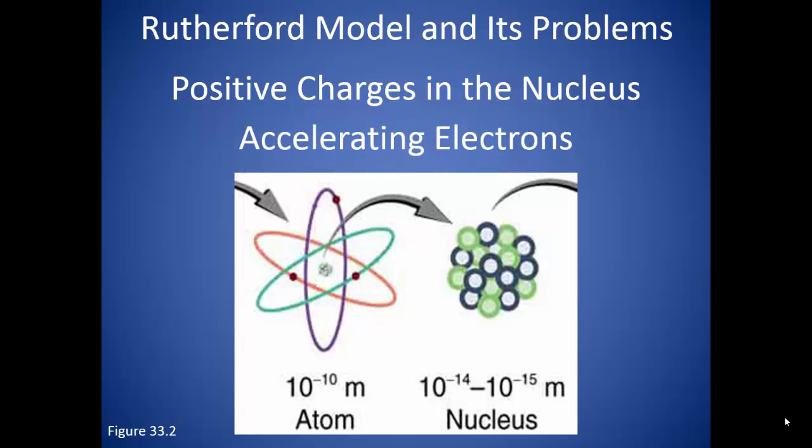The second problem with this model is that we have a negatively charged particle orbiting the nucleus. If an electron is in orbit, it is changing direction, which means it is accelerating. Accelerating charged particles give off radiation, and if radiation is being given off, the electron must be losing energy, which would cause it to spiral into the nucleus.